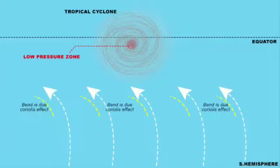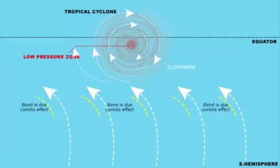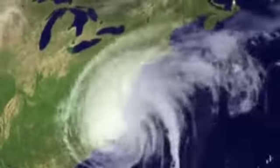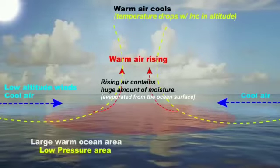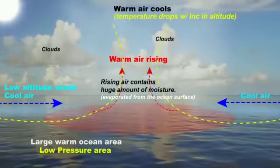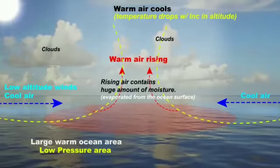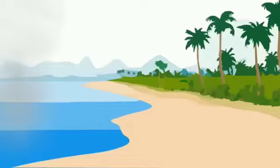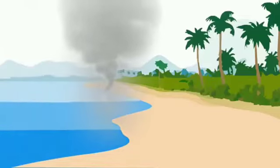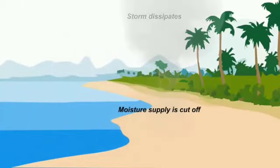Tropical cyclones occur initially over the ocean and coastal regions because there is a continuous supply of moisture from the ocean or sea. Upon reaching land, the moisture supply is cut off and the storm weakens. When a tropical cyclone reaches the coast, this is called landfall, and the power of the cyclone naturally decreases.